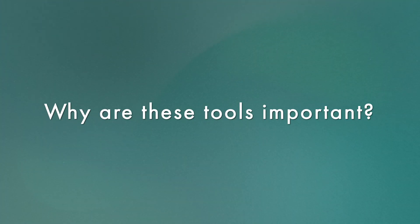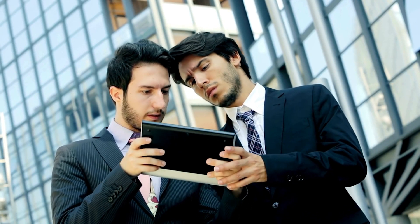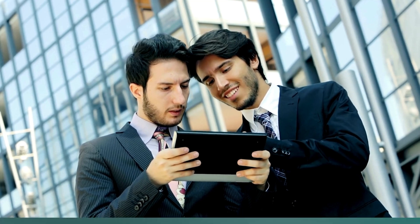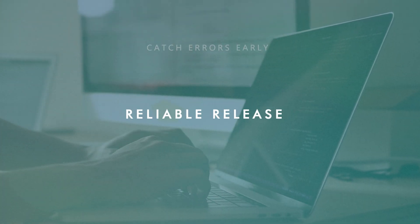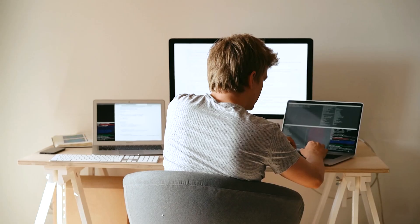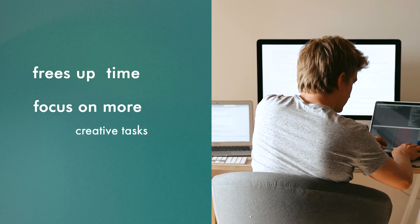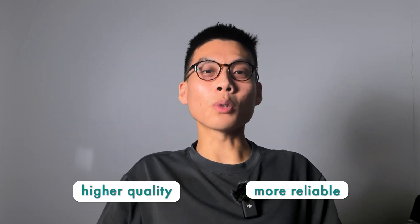Why are these tools important? Imagine you're building a new app. In the past, you might have to wait until you've put together a large section of the app before showing it to anyone and getting their feedback. But what if the app is full of bugs, or contains features nobody wants? That's where CI/CD comes in — it provides a means to continuously test your code, catch errors early, and reliably release it. For DevOps engineers, these tools automate the mundane but crucial parts of the job, freeing up engineers to focus on more creative and strategic tasks. It also ensures higher quality and more reliable software for users — happy engineers and happy users.